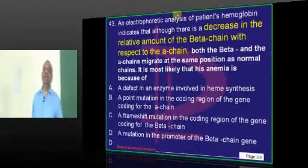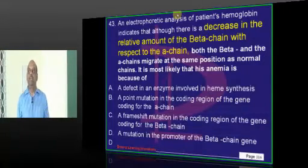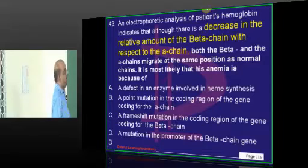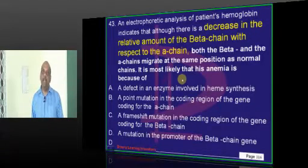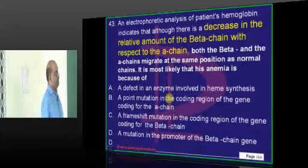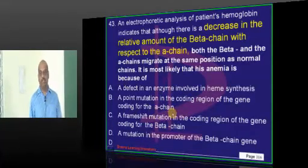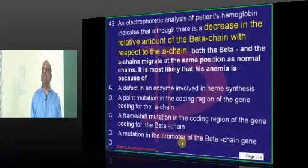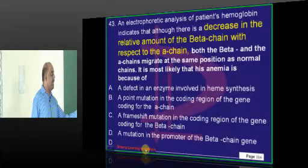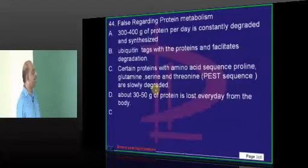Now coming to the electrophoretic analysis. When you have done, you found that there is a decrease in beta chain compared to that of the alpha chain. What is the underlying point about it? It is a problem of beta thalassemia which occurred because of a mutation in the promoter of the beta chain gene. That is the underlying molecular mechanism.